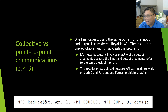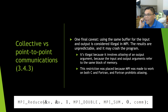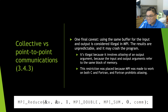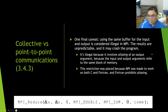One final caveat: using the same buffer for both input and output is considered illegal in MPI — results are unpredictable and may crash the program. This is due to conventions from Fortran, since MPI is designed to work on both C and Fortran. In Fortran, aliasing — where input and output arguments refer to the same block of memory — is prohibited. So passing the address of x as both the first and second argument to MPI_Reduce is not allowed.